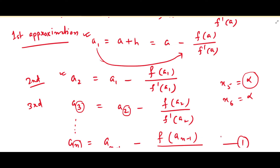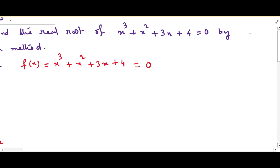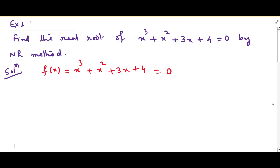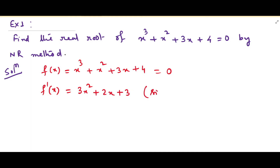Let us go to a problem. Find the real root of x³ + x² + 3x + 4 = 0 by Newton-Raphson method. First, check if the method is applicable by differentiating the function. The derivative is 3x² + 2x + 3 — a very simple expression, so Newton-Raphson method can be applied.